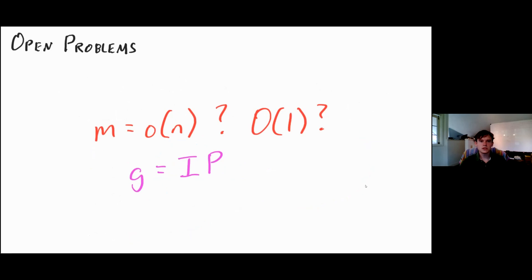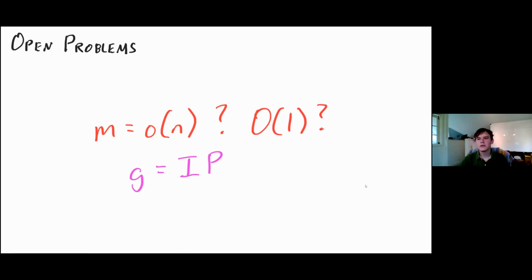For open problems: getting the gadget size down requires thinking about sunflowers, and that's really the big open problem. Sunflowers are so important to the combinatorics community that it's a cool problem to chase regardless. Another interesting direction is whether this sunflower technique can work for a different gadget like inner product — especially because our proof works for DAG-like lifting where we don't currently know it for the inner product gadget.